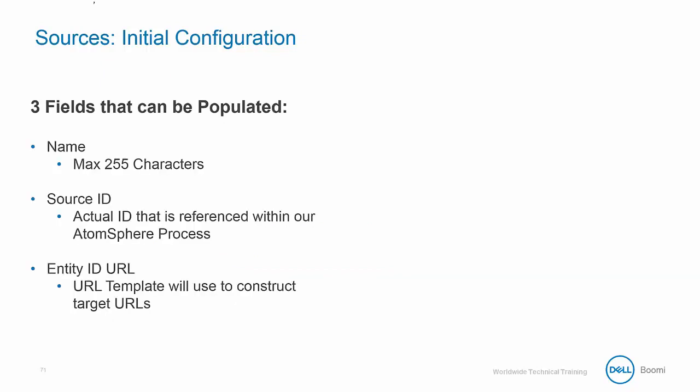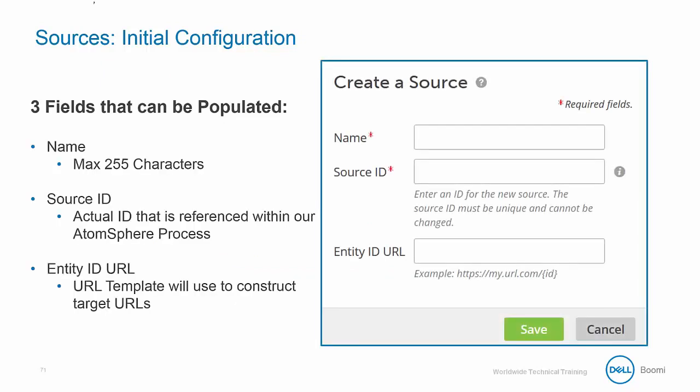When you click the Create Sources button, you'll notice three fields that can be populated. The first is the Name field, which sets the name of the new source and has a maximum of 255 characters. The name is a field that can be changed and is only used for the user's understanding, so it is not used by the actual MDM system.